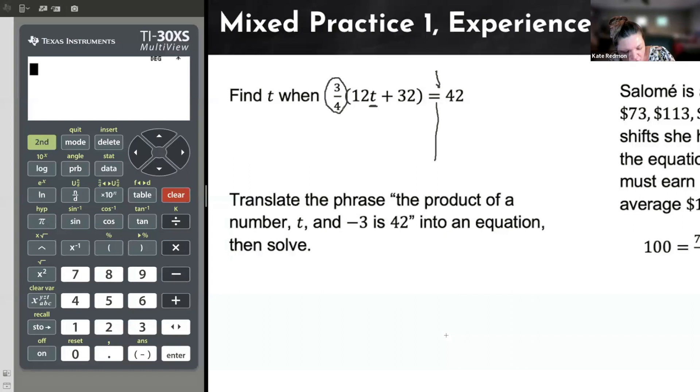Notice what the 3/4 is doing with this grouping. That 3/4 is shoved up against the parentheses. It's multiplying. So I can get rid of it by dividing by 3/4. And you say, can I do that? I say, you sure can. As long as you keep the left hand side and the right hand side equivalent, you can.